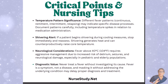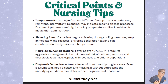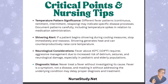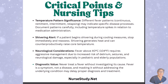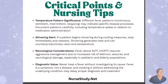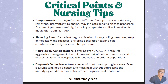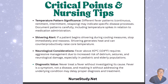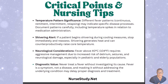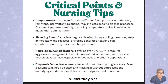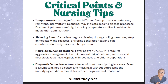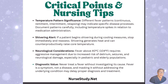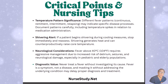Some critical nursing tips you may see on the NCLEX or in a case study: First, temperature pattern significance — there are different fever patterns: continuous (fever doesn't go away), remittent, intermittent, or relapsing (fever returns after resolving). These patterns may indicate a specific disease process, so document them carefully, including temperature spikes in relation to medication administration. Second, shivering — if a patient begins shivering during cooling measures, stop immediately and reassess, because shivering generates heat and can counter-productively raise the core temperature.